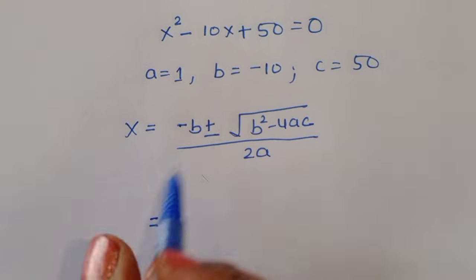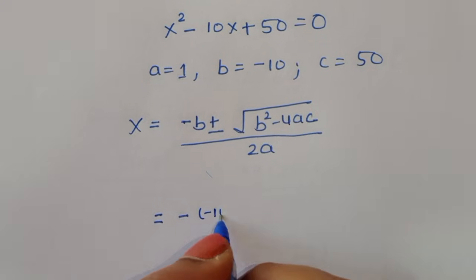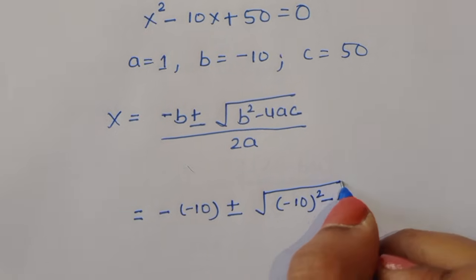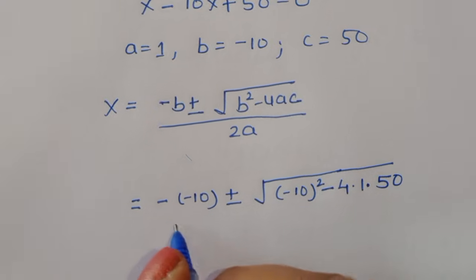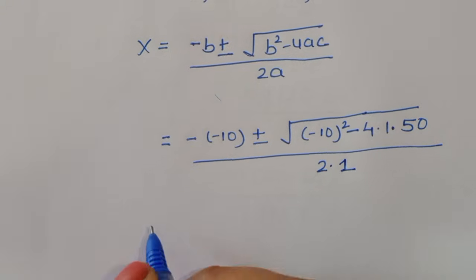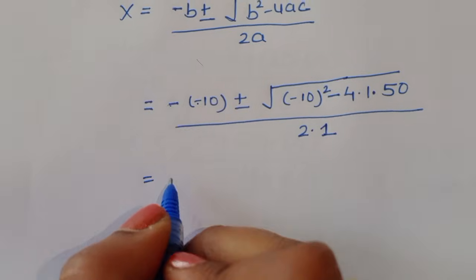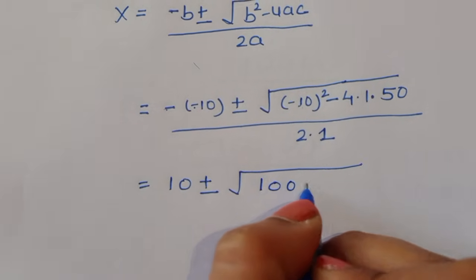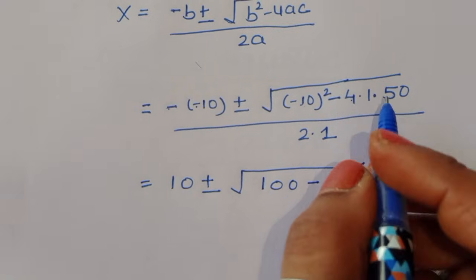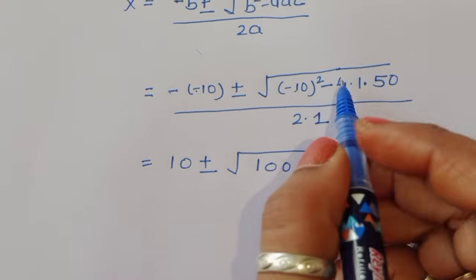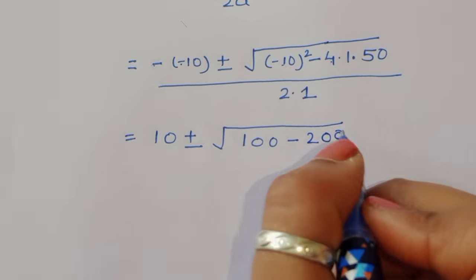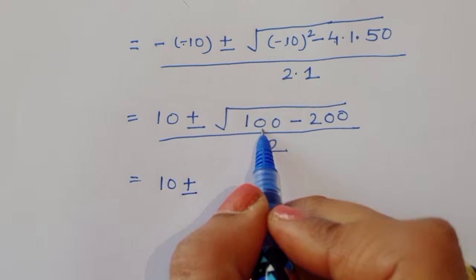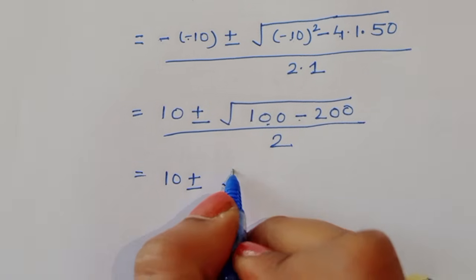Substituting the values: minus b is minus of minus 10, giving plus 10, plus or minus the square root of (minus 10) squared minus 4 times 1 times 50, divided by 2 times 1. That is 10 plus or minus the square root of 100 minus 200, divided by 2. So we get 10 plus or minus the square root of minus 100, divided by 2.